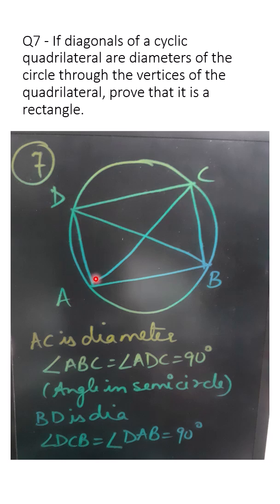So if AC is a diameter, then angle ABC and angle ADC will be 90 degrees. Because these are angles in a semicircle. Correct?